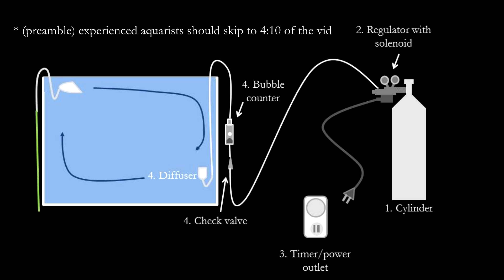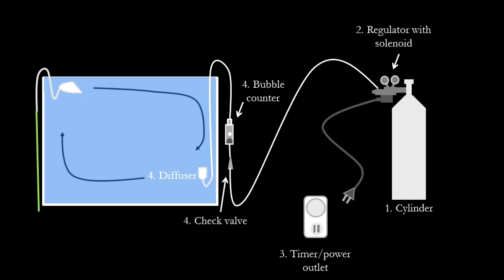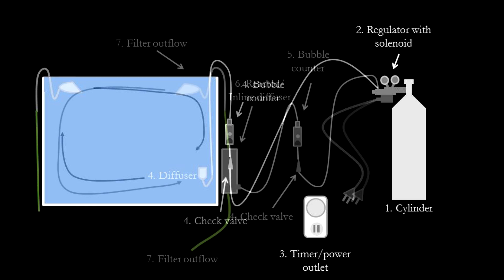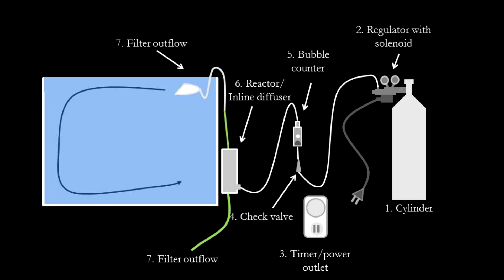You can buy a regulator without a solenoid attached, but the solenoid allows you to control the timing of CO2. Basically when the solenoid is plugged into the power outlet, it allows CO2 to flow through the valve, and when the solenoid power is cut, it stops the flow of CO2 into the tank. This allows you to put the solenoid onto a timer and only allow the CO2 to flow in the day when the lights are on and the plants are photosynthesizing. In an alternative setup, the CO2 is not channelled to an in-tank diffuser but instead is channelled to an exterior reactor, which is part of the filter outflow and mixes with the water before entering the tank.